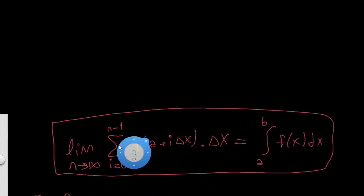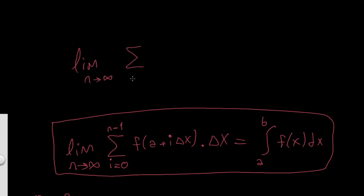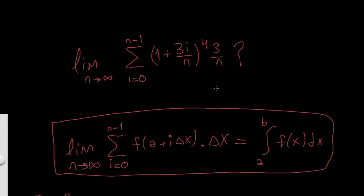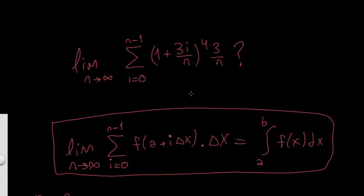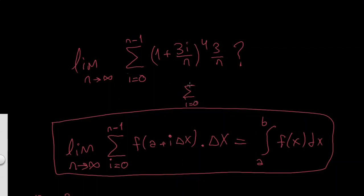Now let's do a few examples. For example: limit as n goes to infinity of the sum, i goes from 0 to n−1, of (1 + 3i/n)⁴ times (3/n). We are asked how can you find this limit, how can you find this sum. Let's see if this sum is similar to our formula. You should be careful — this representation is not the same as saying i goes from 0 to infinity; this is totally different.